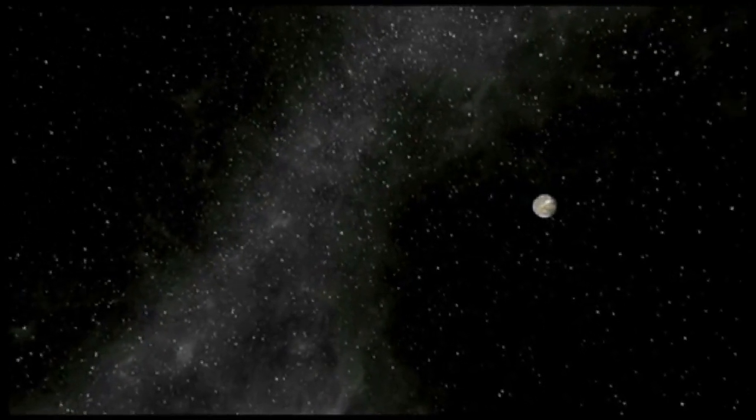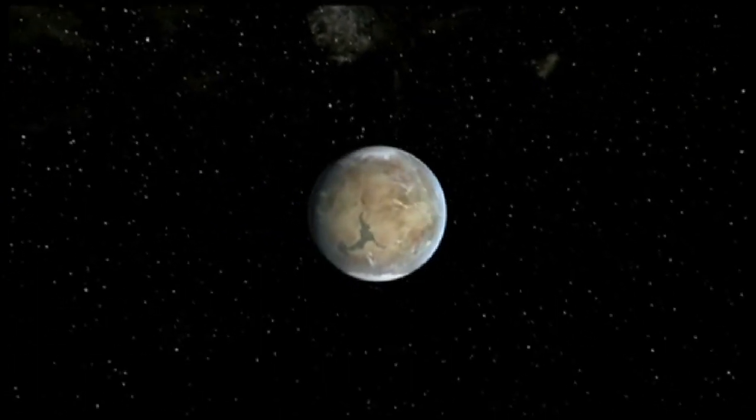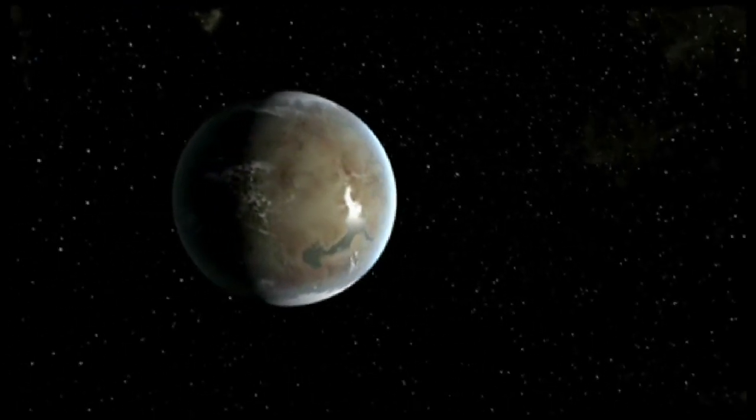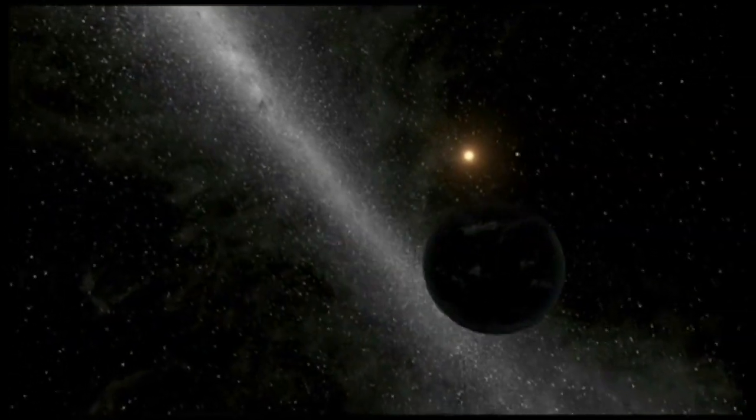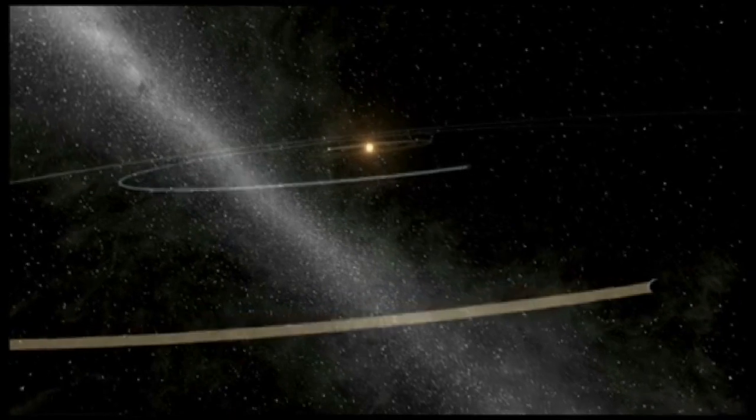The smallest of the habitable zone planets is called Kepler 62f. It is 40% larger in size than Earth and is likely a rocky world. Kepler 62f orbits every 267 days. These two planets are the smallest yet discovered in the habitable zone of another star.